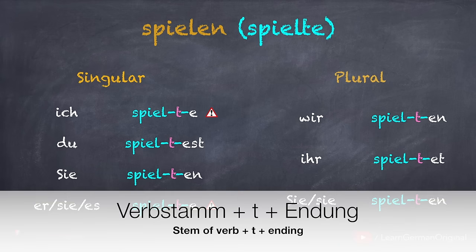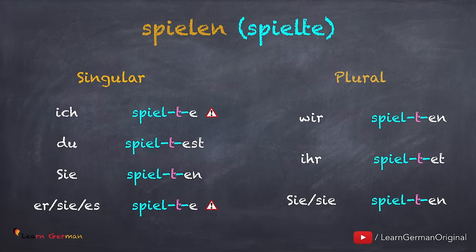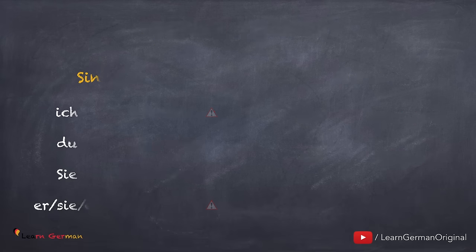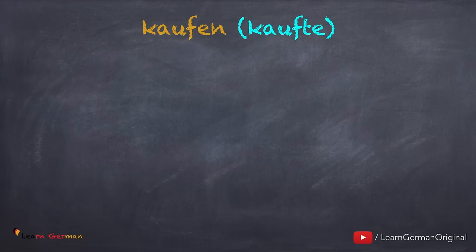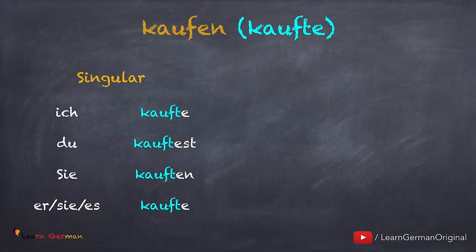Und wie bildet man Präteritum für regelmäßige Verben? Wir nehmen den Verbstamm plus t plus die Endung. Wir schauen uns noch ein Beispiel an. Kaufen, Präteritum kaufte.